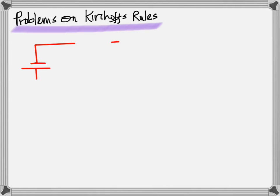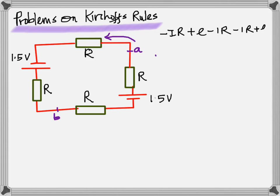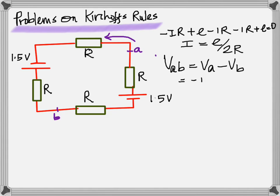This is a circuit. The resistances are all of the same value and you have two batteries each of 1.5 volts. If you go counterclockwise beginning with point A, this is what you get, because you're going in the direction of current through R, and remember that the direction of current is assumed to be flowing this way.